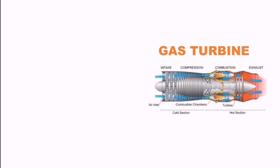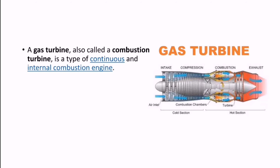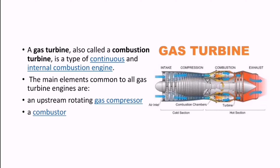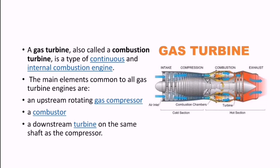Looking at this sectional figure of a gas turbine: a gas turbine, also called a combustion turbine, is a type of continuous and internal combustion engine. The main elements common to all gas turbine engines are an upstream rotating gas compressor, a combustion portion in the middle, and a downstream turbine on the same shaft as the compressor.